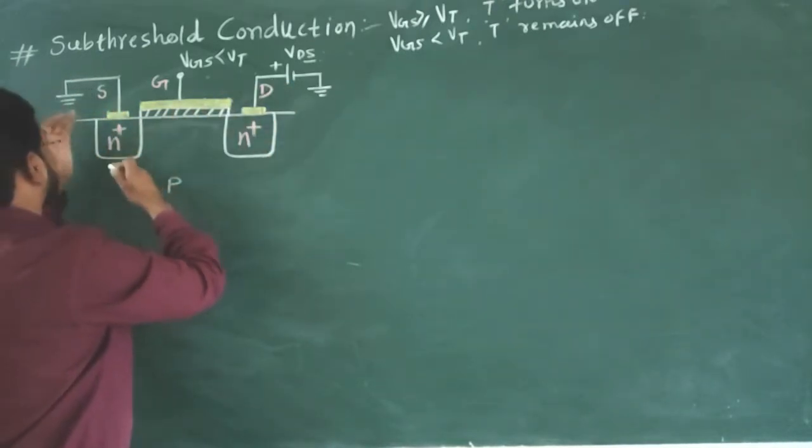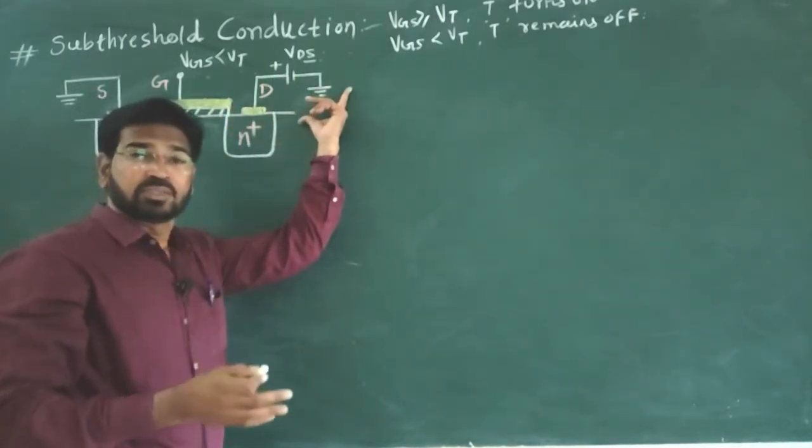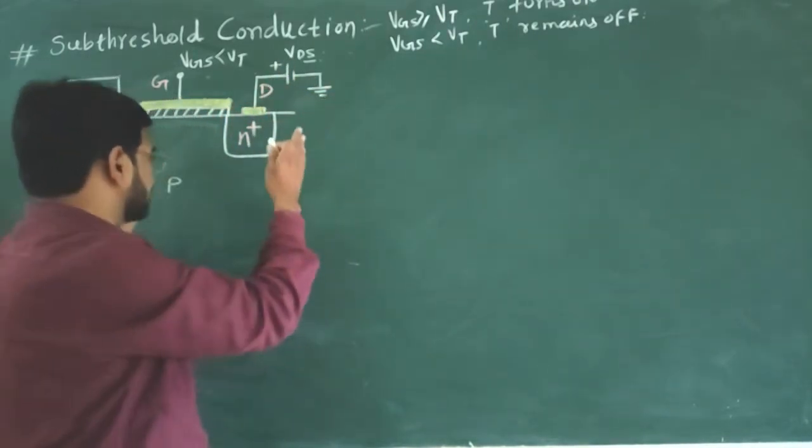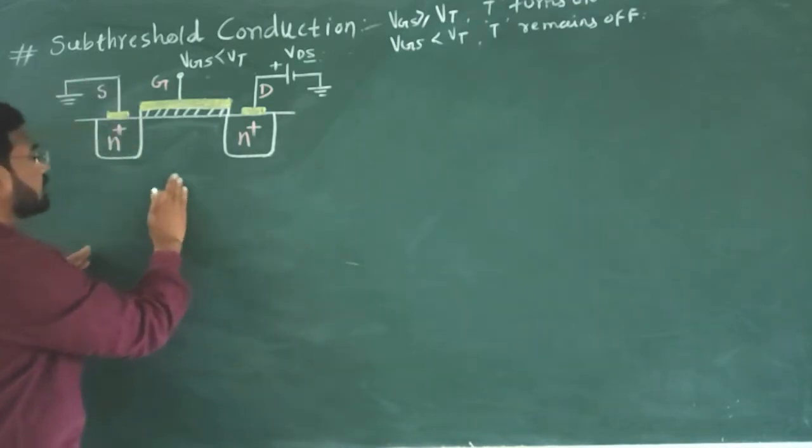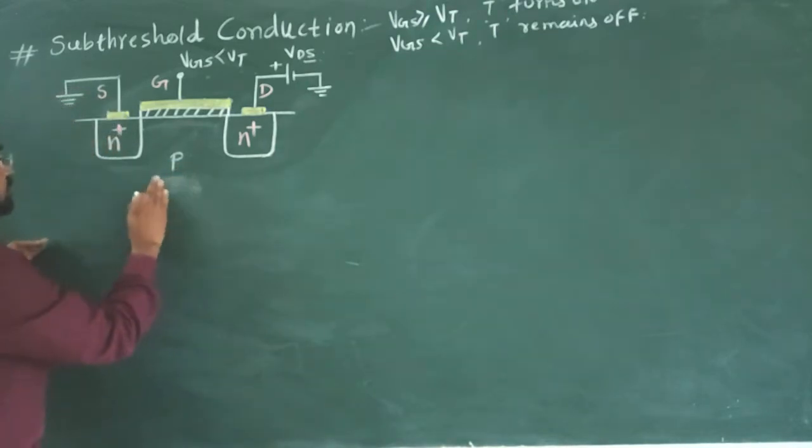Source is at ground and drain is connected to positive DC supply. Now, in this situation when transistor is in saturation region, we have drain current equation.